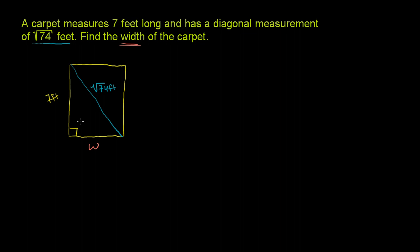The side opposite the right angle, or the 90 degrees, is the hypotenuse, or the longest side. It is the square root of 74.